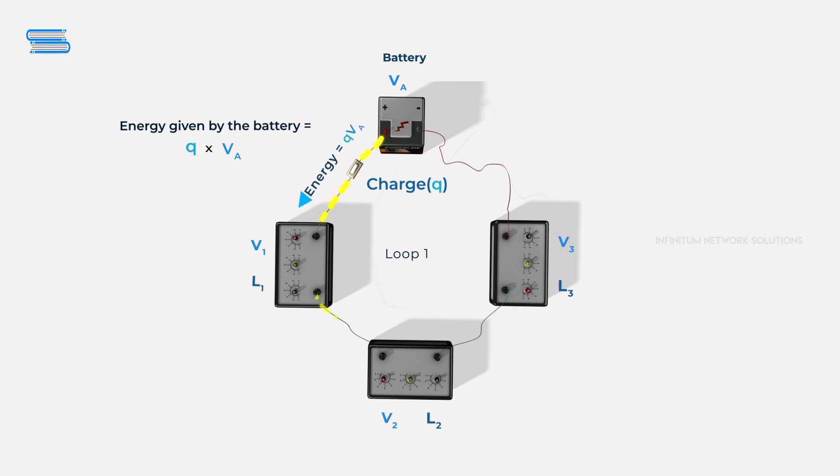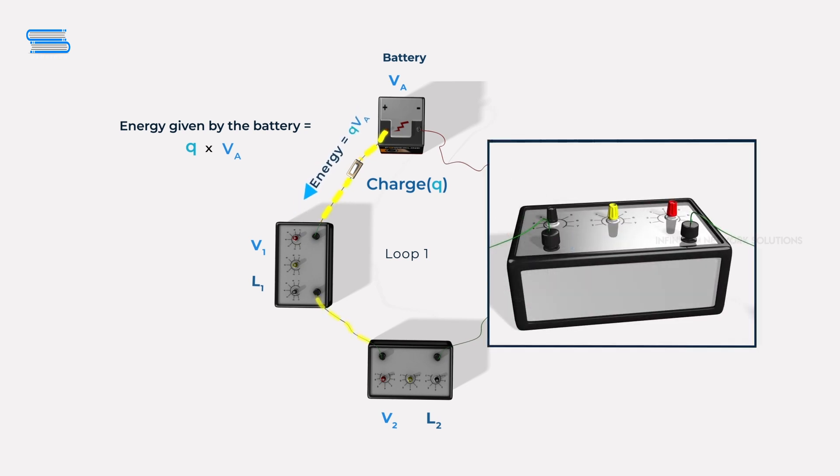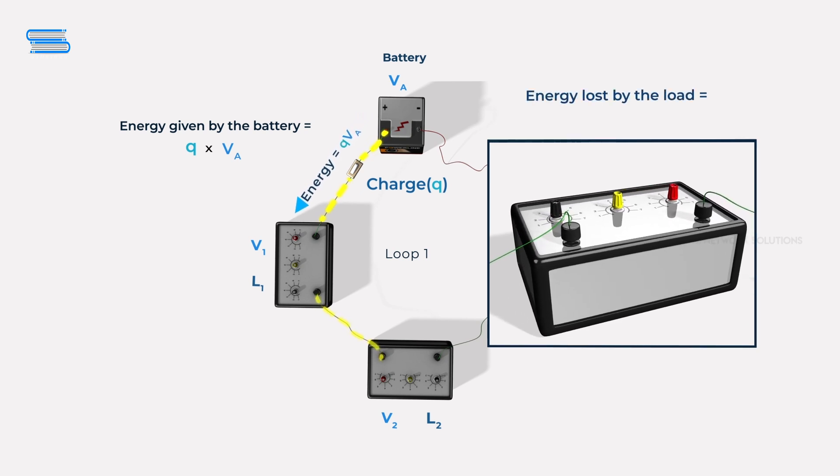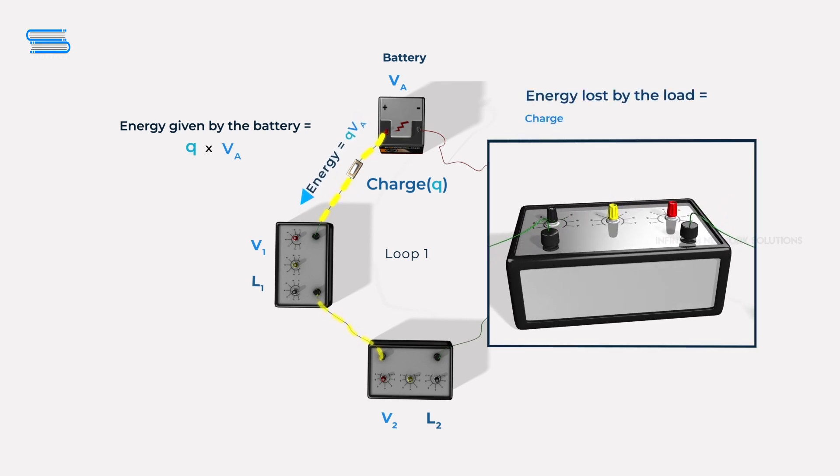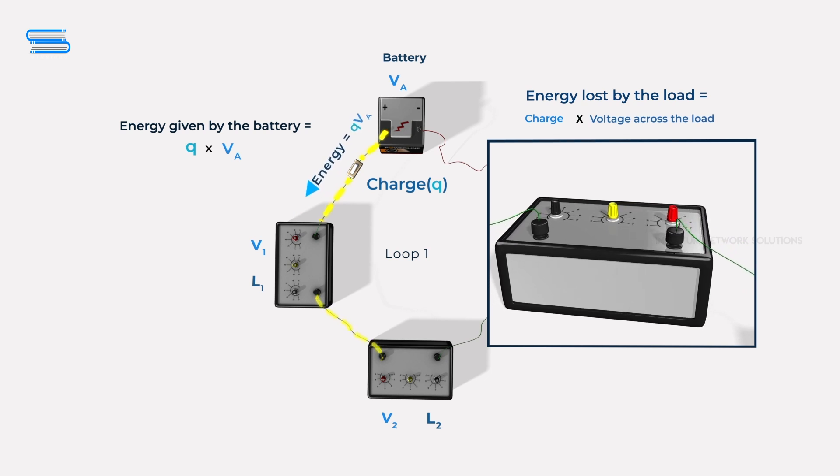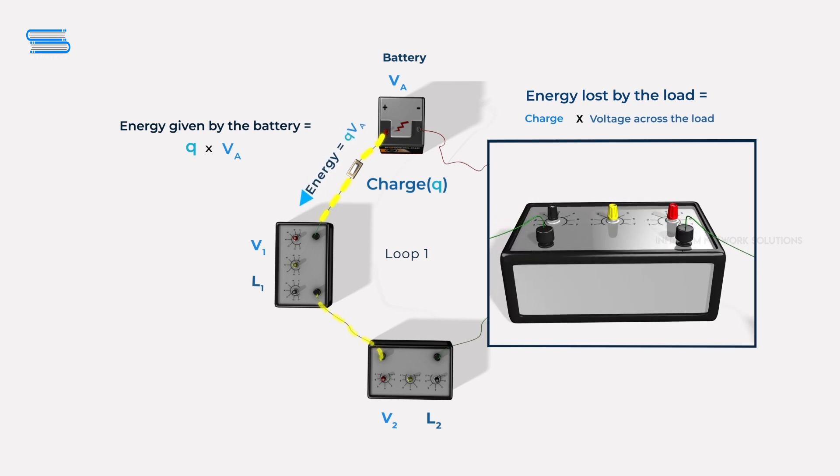As the charge goes through the loads, this energy is consumed by the loads. So the energy lost by each load is going to be equal to the charge times the branch voltage across the load.